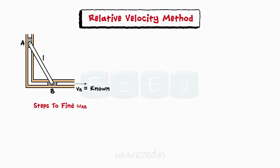Step 1: Locate a point whose magnitude and direction is known. Here, the magnitude and direction of point B is known. Step 2: Locate a point whose direction is known, that is point A.